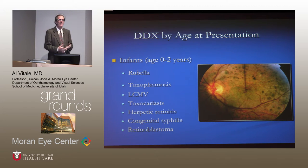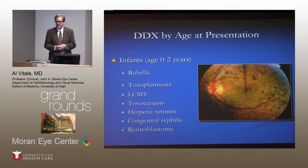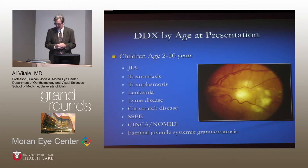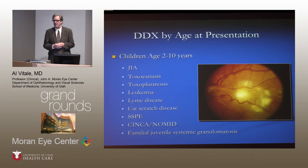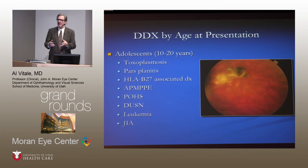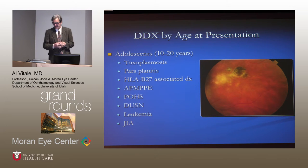One may also think about the differential diagnosis in terms of age of presentation. An infant might be more likely to present with a congenital infectious syndrome such as rubella, as you see here, whereas a child aged two to ten would be more apt to present with an acquired infection such as toxocariasis or an endogenous syndrome such as juvenile idiopathic arthritis. Adolescents might present with toxoplasmosis, multifocal choroiditis, or other entities such as Birdshot or other multifocal choroiditides.